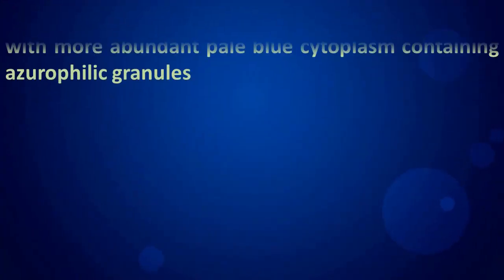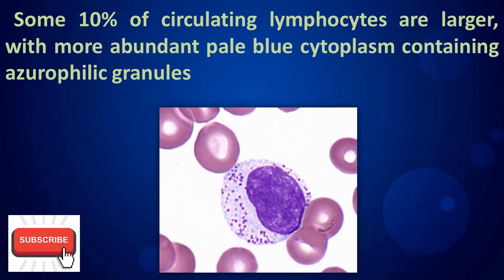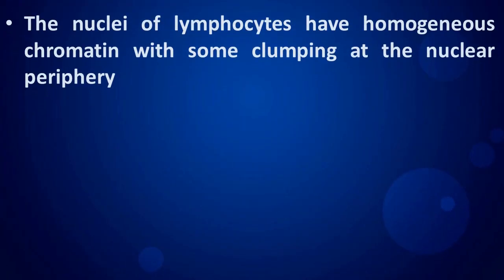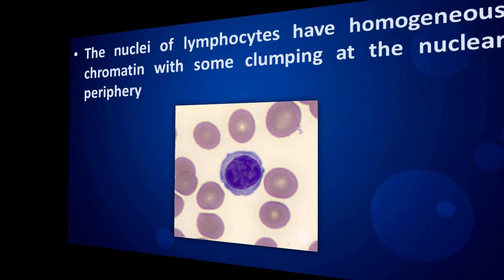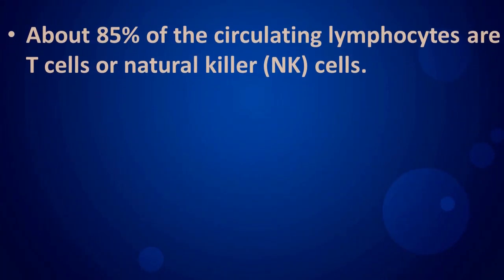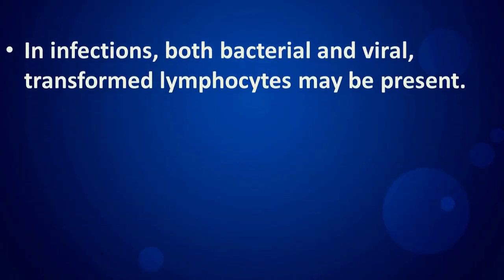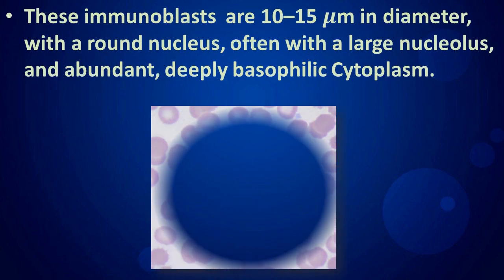Some 10 percent of circulating lymphocytes are larger, with more abundant pale blue cytoplasm containing azurophilic granules. The nuclei of lymphocytes have homogeneous chromatin with some clumping at the nuclear periphery. About 85 percent of the circulating lymphocytes are T cells or natural killer cells. In infections, both bacterial and viral, transformed lymphocytes may be present.